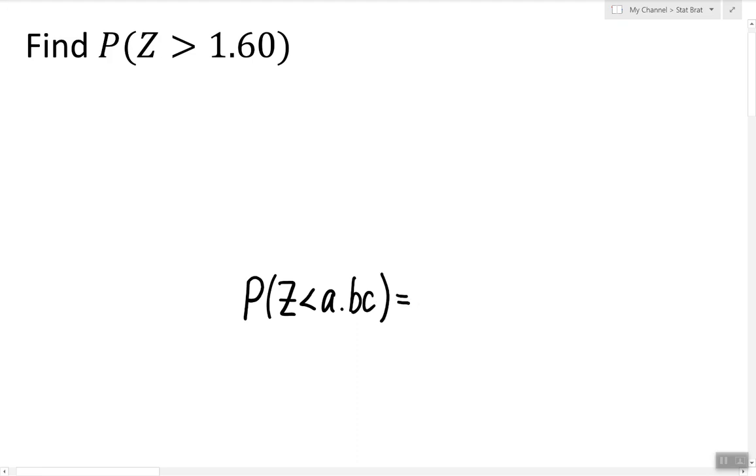are recorded in what's called the z-table and can be found by looking at the intersection of the associated row and column.